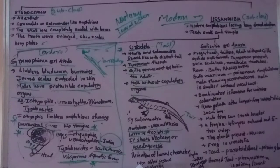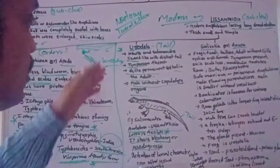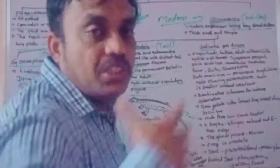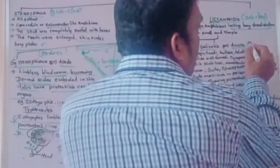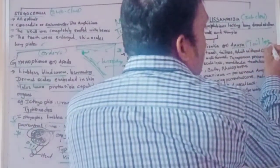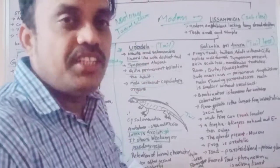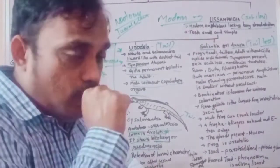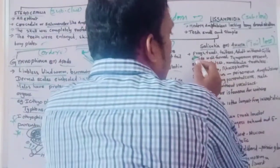Neoteny is a very important characteristic of Urodela. The next order is Salentia or Anura. 'Salient' means jumping — these are jumping amphibians. 'Anura': 'a' means absent, 'nura' means tail — so Anura are tailless amphibians. Examples are frogs and toads.